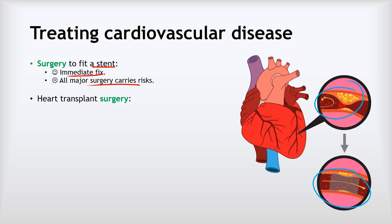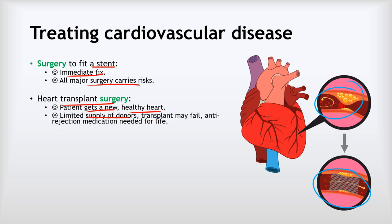Another potential option is heart transplant surgery — the patient gets a new healthy heart. However, there is a limited supply of donors, as we can only get hearts from people who have died with healthy hearts and who also have the right tissue match. Transplants may fail, and it often means that the patient needs anti-rejection medication for the rest of their life to prevent their immune system from attacking the new heart. So heart transplant surgery can be good, but there are significant limitations.